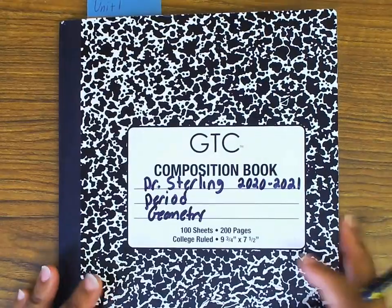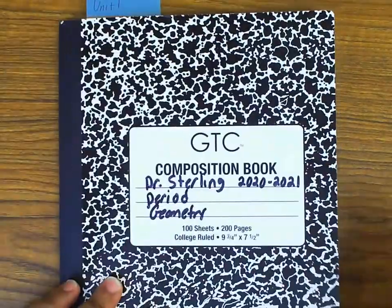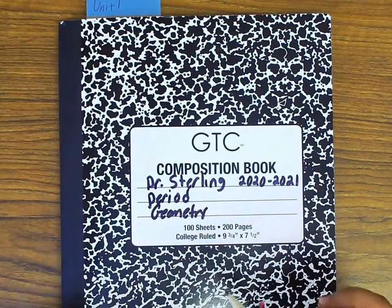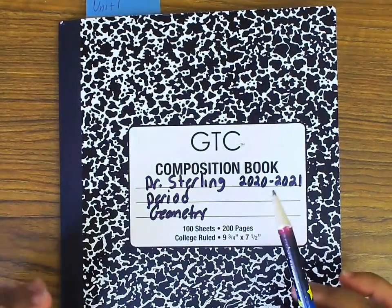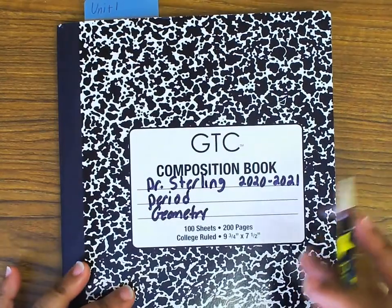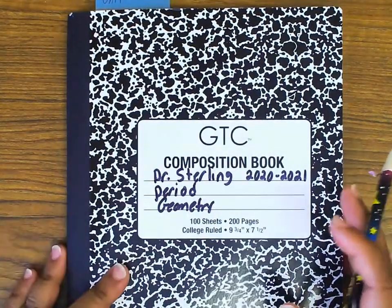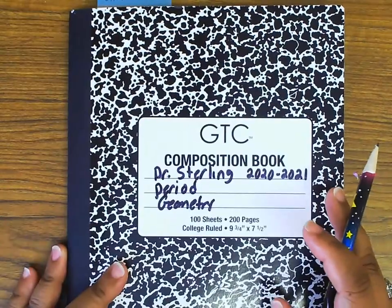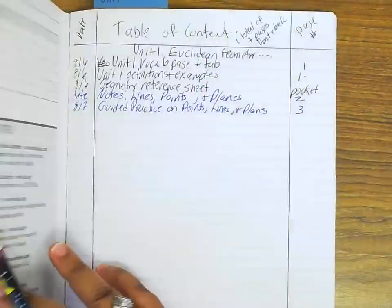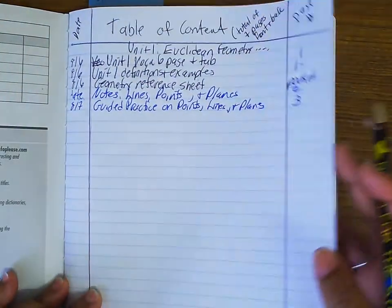All right, today we are going to be simplifying radicals. This is more of a review of what you did in Algebra 1, because you do need this when we get into the distance formula. That's why we're going to practice simplifying radicals today.